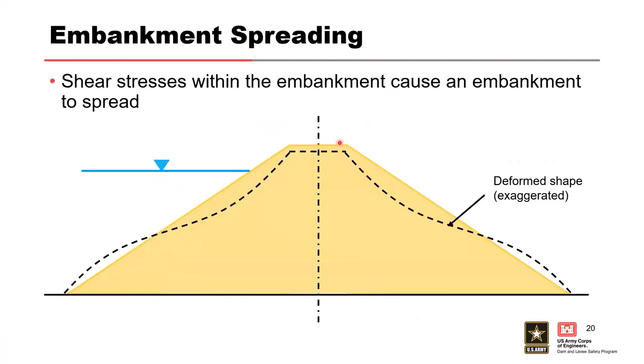An idealized cross-section shows that even a perfectly constructed trapezoidal embankment will experience some lateral spreading during construction. In a well-constructed embankment, this shouldn't be significant — you shouldn't see large toe bulges. But the point is this is not a static section that remains unchanged, even during construction.